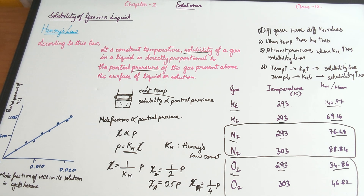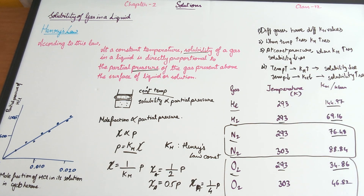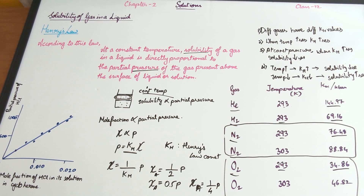Just to quickly discuss the effect of temperature: solubility decreases with an increase in temperature. Gas molecules dissolved in the liquid get removed much more easily at higher temperatures. Also, the process of dissolution is exothermic, and because of dynamic equilibrium, the number of molecules that get dissolved decreases when temperature increases. With that, we're done with the solubility of a gas in a liquid. In the next video, we will discuss the example problem from your textbook followed by the index questions.